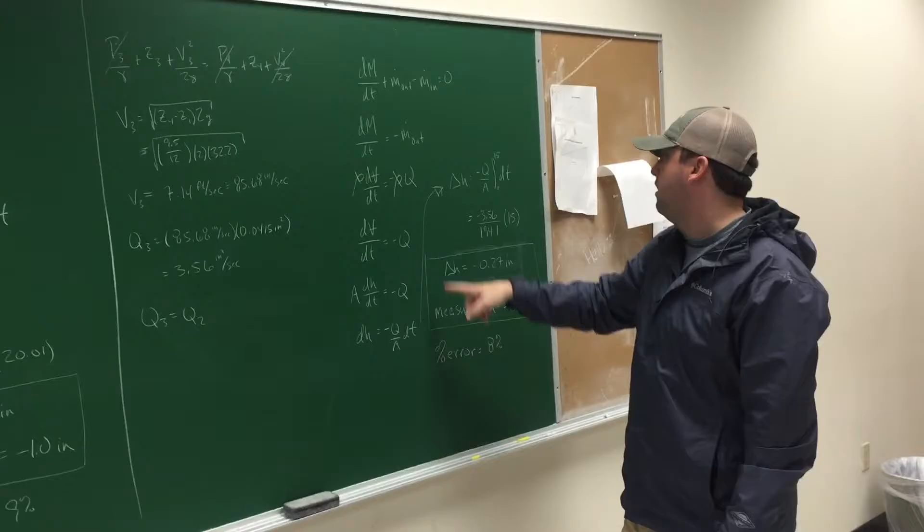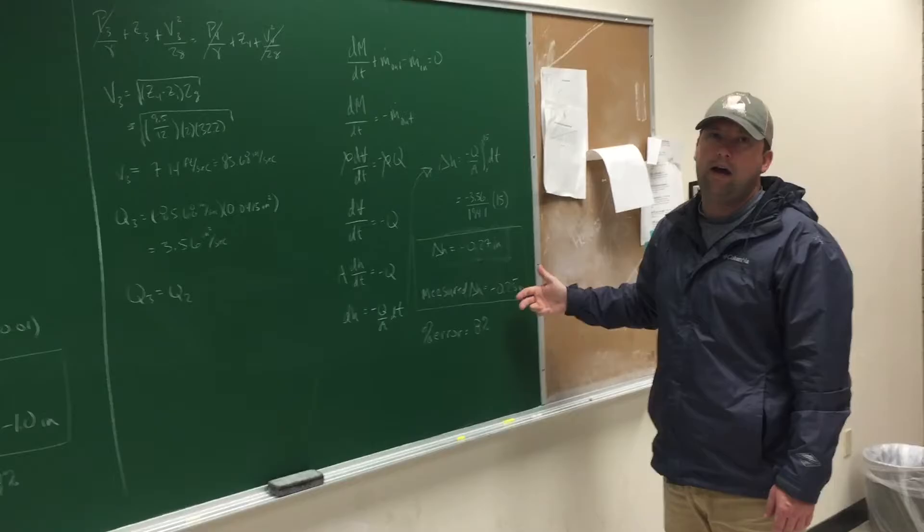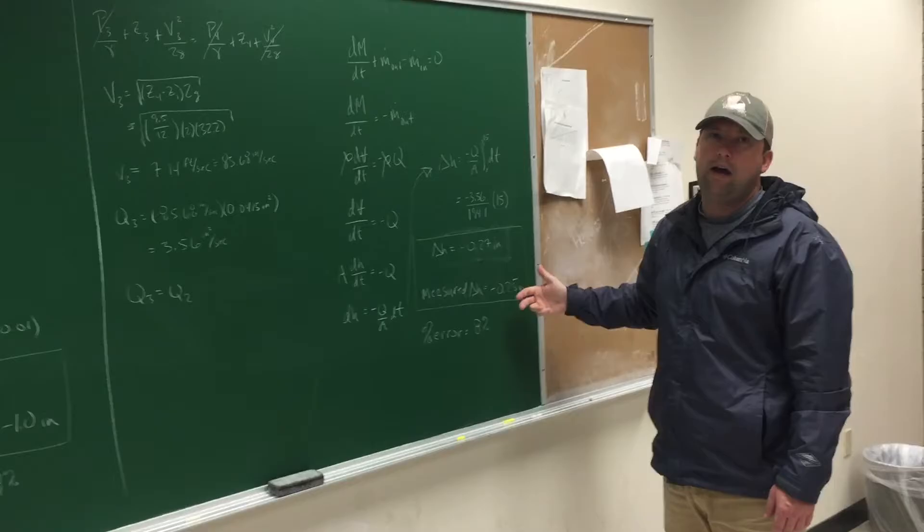We used that with our momentum equation. And we found our new delta H with this nozzle to be about 0.27 inches. What we measured it to be during the experiment was 0.25 inches. So, pretty close. It's an 8% error, which we're comfortable with in this experiment.